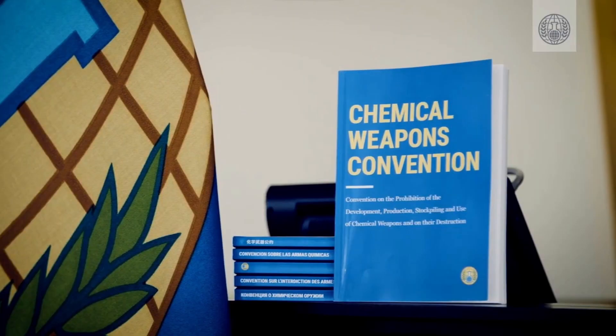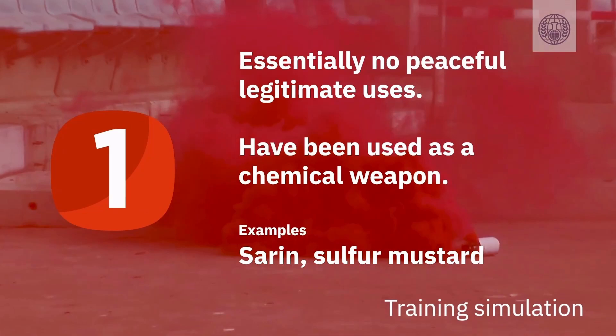Chemicals are sorted into three categories of prohibition. Schedule 1 are the most dangerous — these are toxic chemicals or precursors that have essentially no peaceful, legitimate uses and have been used as chemical weapons.